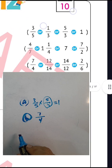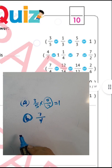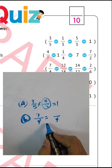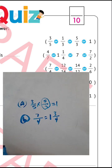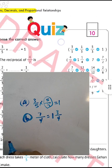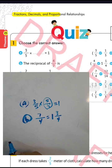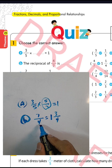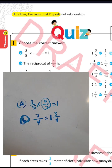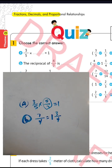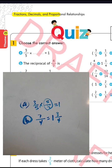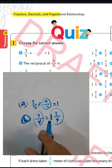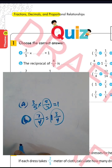Seven over four — we must convert from improper to mixed number. Four goes into seven: seven divided by four equals one remainder three. So the reciprocal of seven over four is one and three over four. The reciprocal of four over seven is seven over four, and the result converts to one and three over four. You can convert from improper to mixed number.